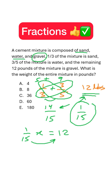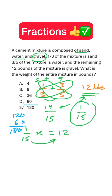Let's do that. Ten times twelve is one hundred twenty, and five times twelve is half of that — sixty. So the total is one hundred eighty. That's our answer — Choice E.